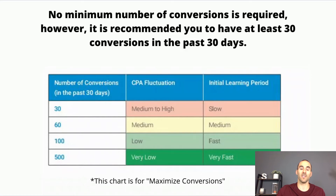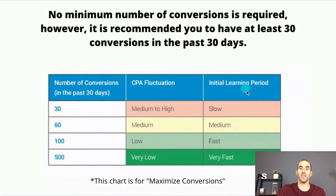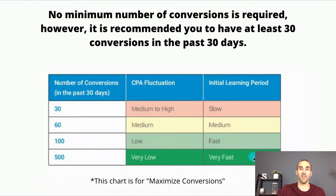This chart is for maximize conversions — the little brother of maximize conversion value. It shows that if you have 30 conversions in the past 30 days, the learning period will be very slow, which could lead to wasting significant money. However, if you have a lot of conversions — like 500 — the learning period is very fast.